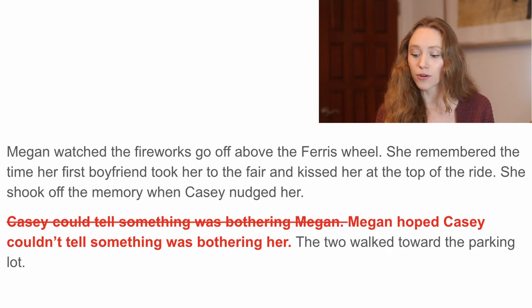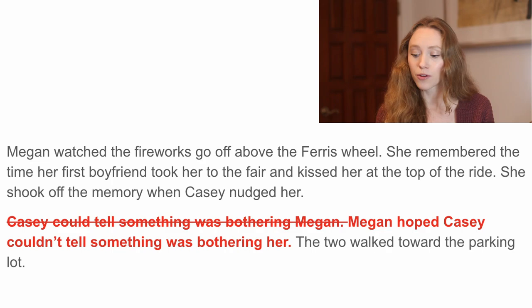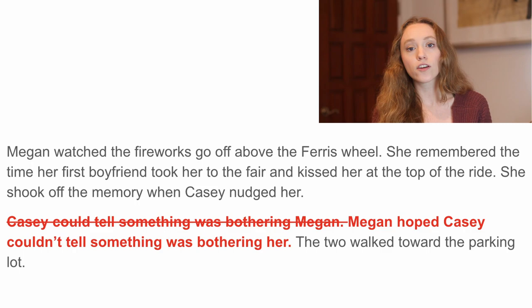The revised line reads: "Megan hoped Casey couldn't tell something was bothering her. The two walked toward the parking lot." This sentiment is a little different, but it allows us to experience the scene from only Megan's perspective. Instead of knowing that Casey can tell something is bothering Megan, we see Megan hope that Casey doesn't know. I recommend going back through your manuscript to identify any places where you are unintentionally departing from your point of view character and revising accordingly.